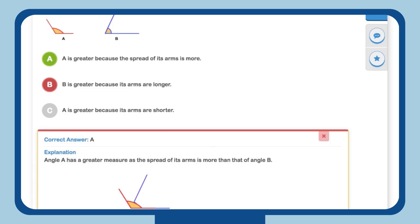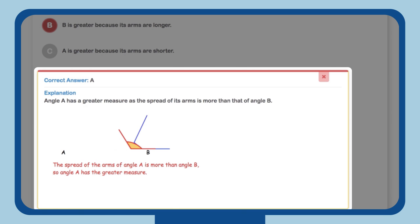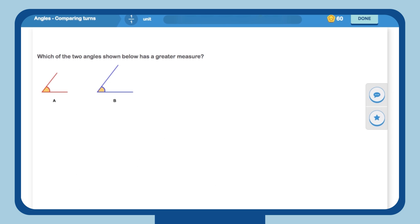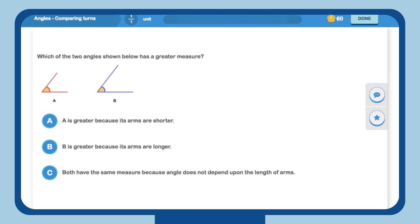MindSpark's explanation shows A has a greater spread of the angle compared to B, hence has greater measure. Aarti is again given a question to test her conceptual understanding, asking her the measure of the angle.